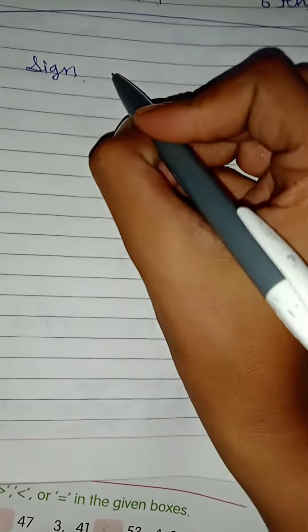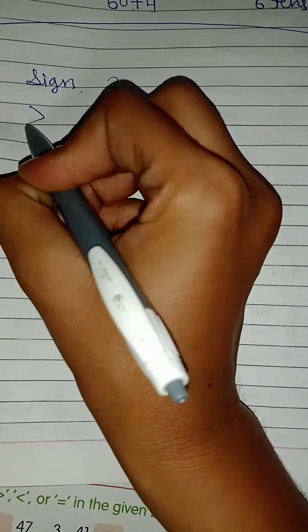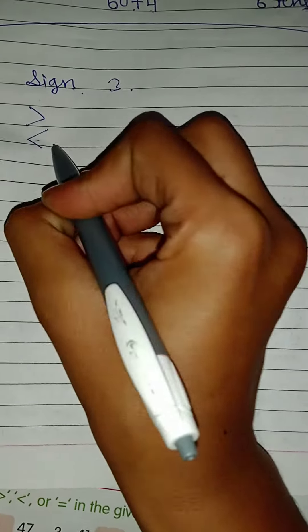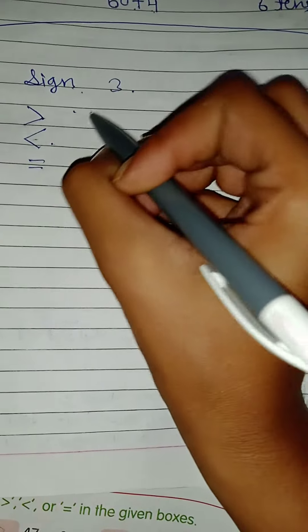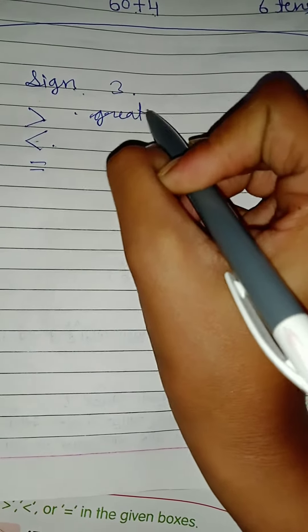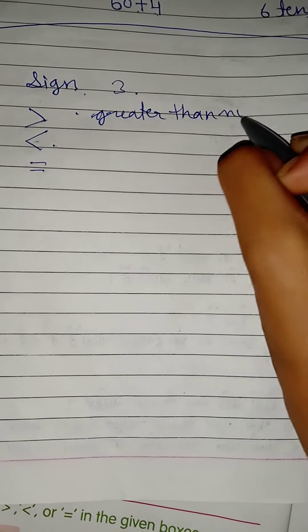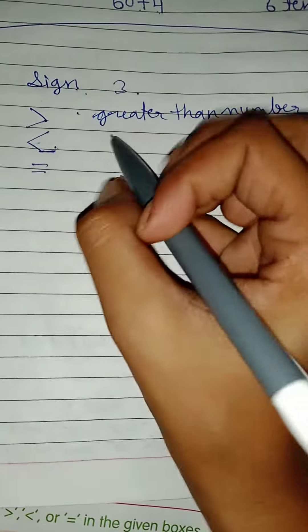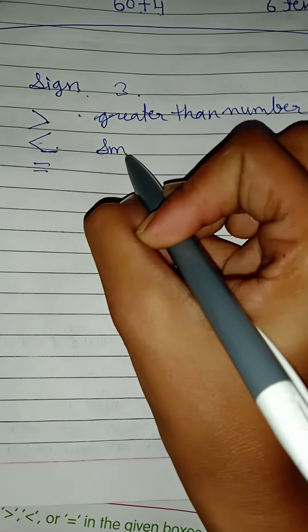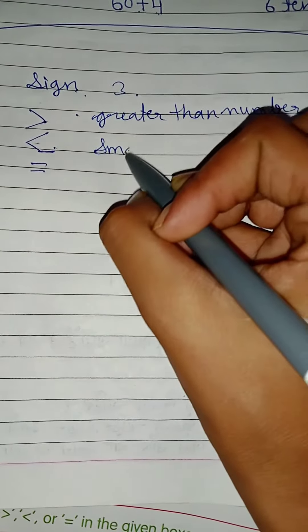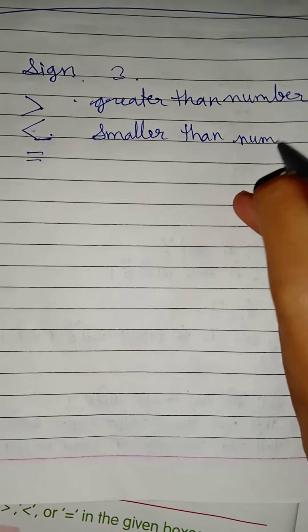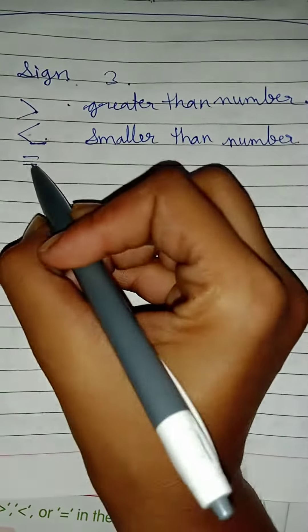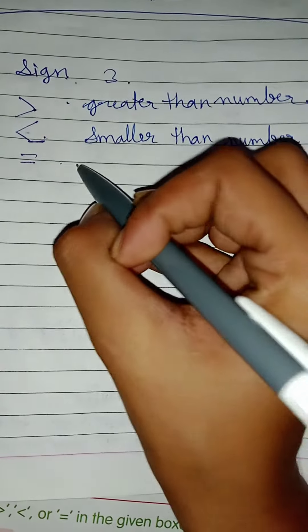Sign has three types: greater than, smaller than, and equal. This sign is used for greater than number. This sign is used for smaller than number or less than number. This sign is used for equal numbers.